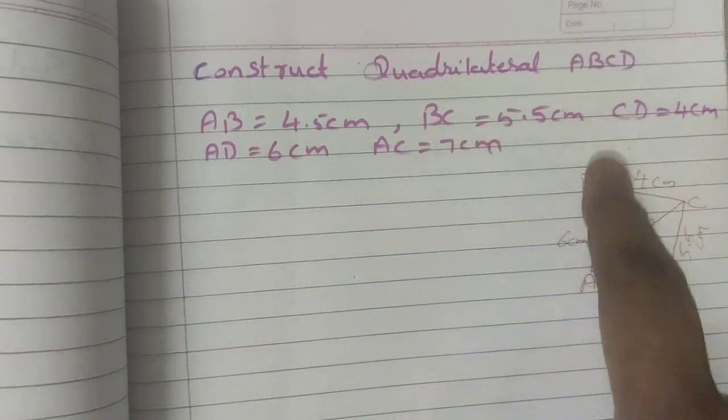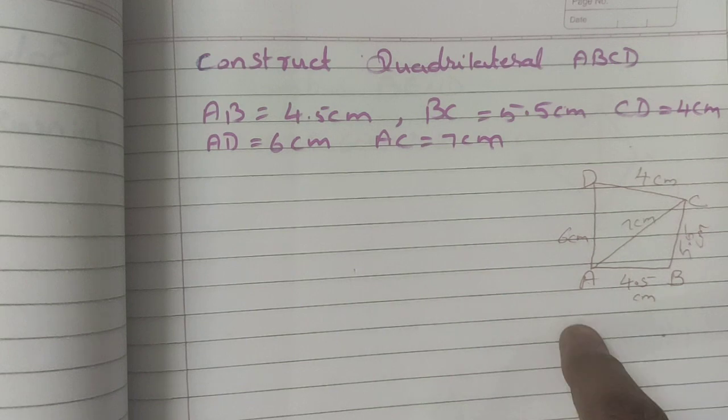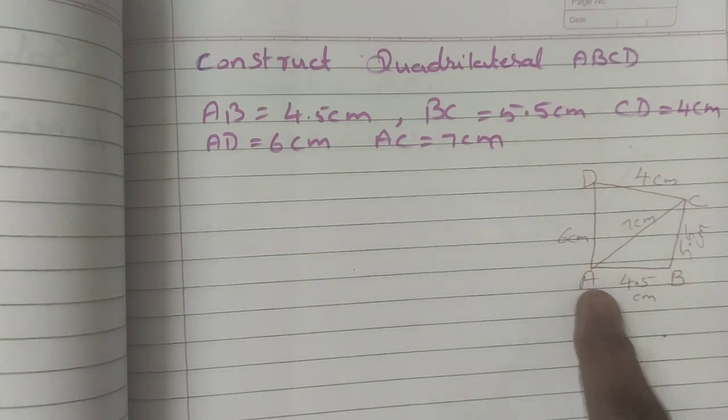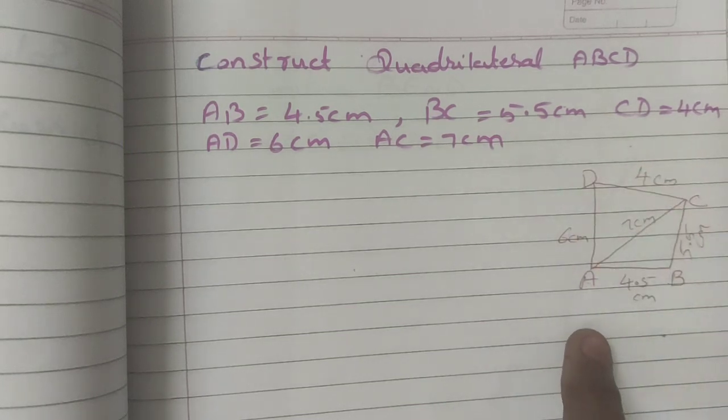By seeing the question, first we should draw the rough diagram. Let the quadrilateral, as you know, four sided figure. So draw A, B, C, D. This is very important thing you should note.